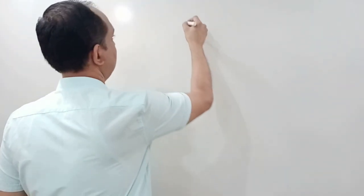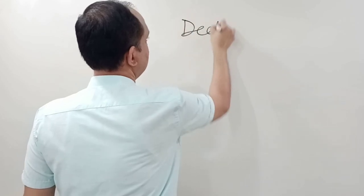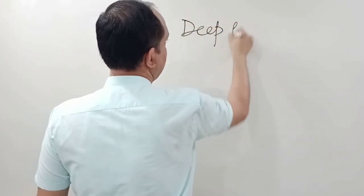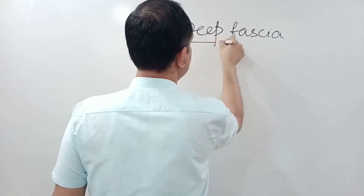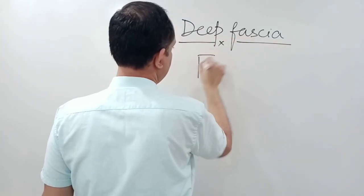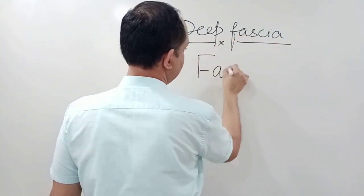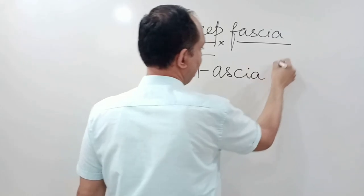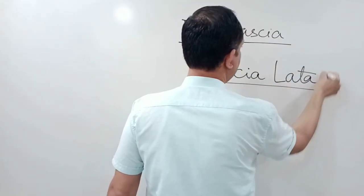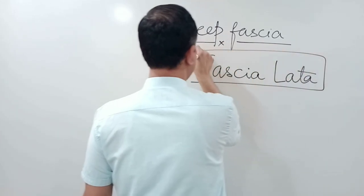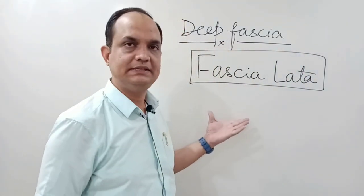Hello friends, today we will talk about the fascia of the thigh. When we speak of the deep fascia of the thigh, the other name for the deep fascia of the thigh is fascia lata. So fascia lata and the deep fascia of the front of the thigh are the same thing.